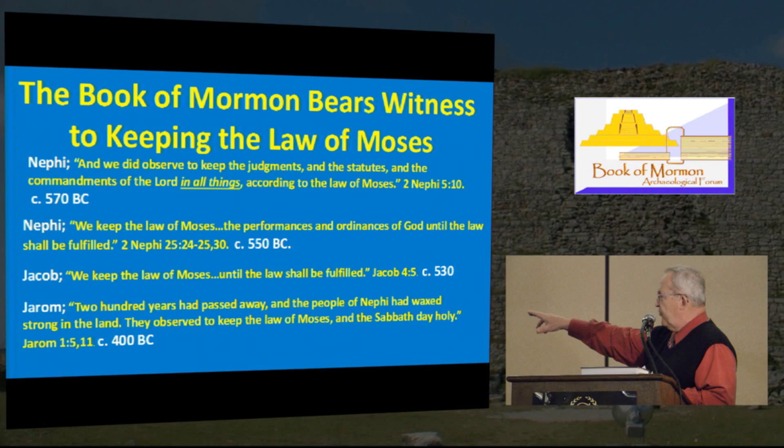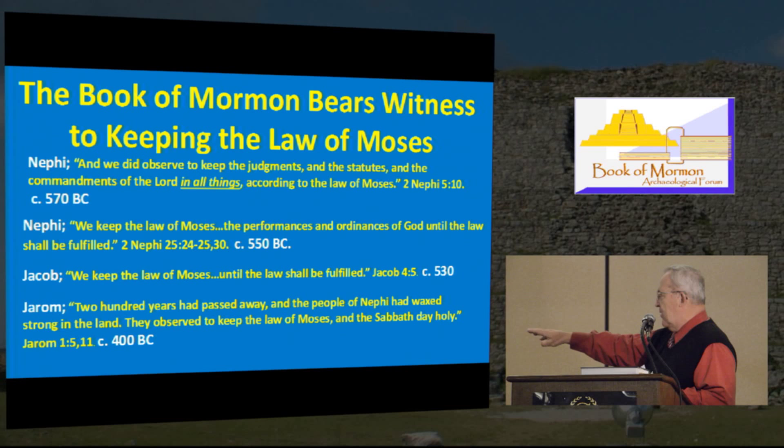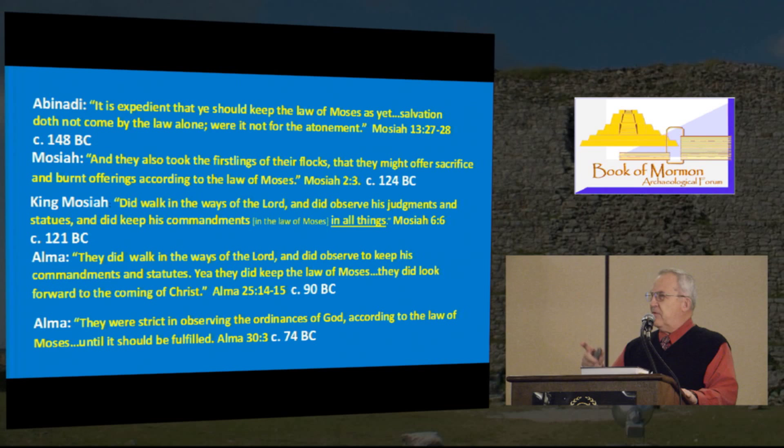Moving from 570 down to 550, 'we kept the law of Moses, the performances and ordinances of God until the law shall be fulfilled.' That's 550 down to 530. 'We did keep the law of Moses until the law should be fulfilled' — that's Jacob, the brother of Nephi. Then Jarom: '200 years had passed away, and the people of Nephi had waxed strong in the land, and they observed to keep the law of Moses and the Sabbath day holy.'